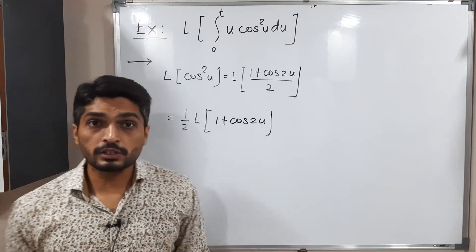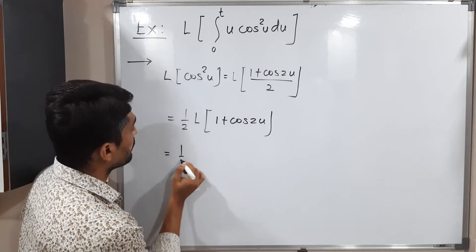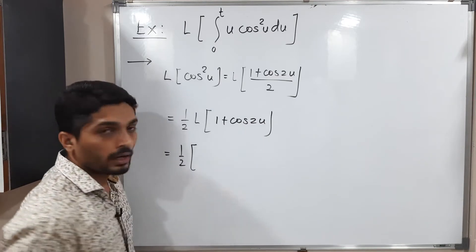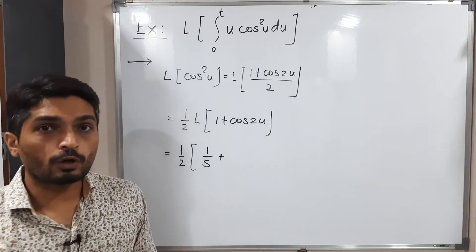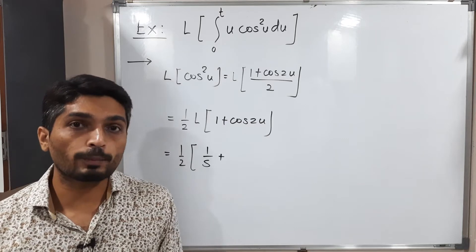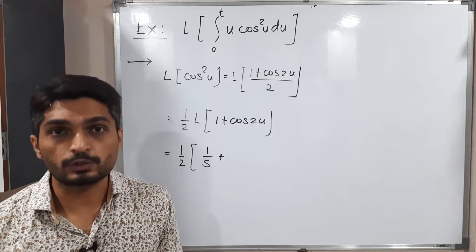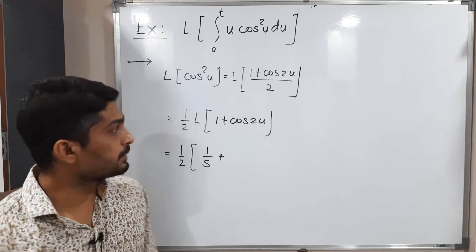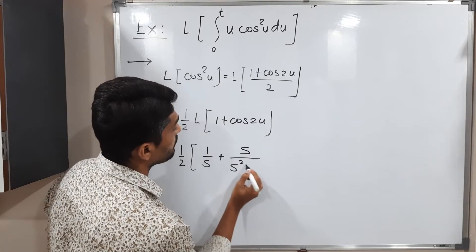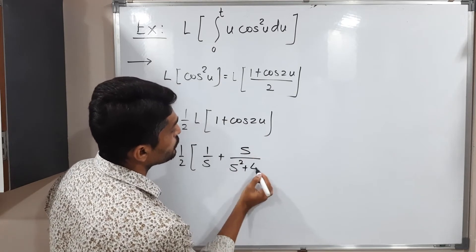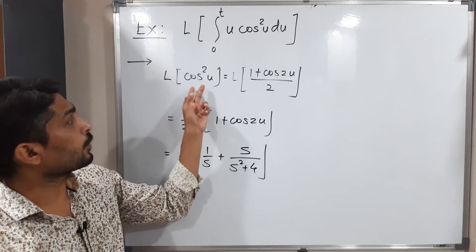Since 1/2 is a constant we take it outside, giving (1/2)·L{1 + cos(2u)}. When addition is present we can take separate Laplace transforms: L{1} = 1/s, and for L{cos(2u)} we use the formula L{cos(at)} = s/(s² + a²) with a = 2, giving s/(s² + 4). So L{cos²(u)} = (1/2)[1/s + s/(s² + 4)].